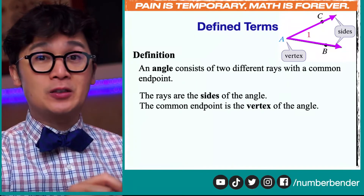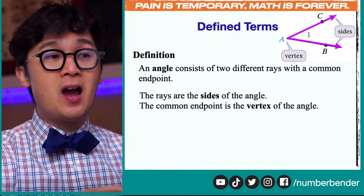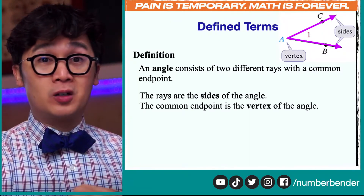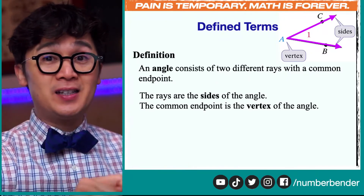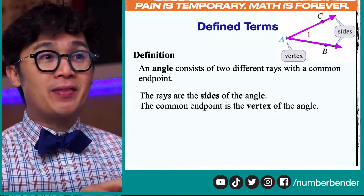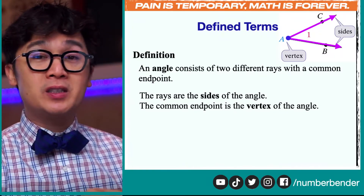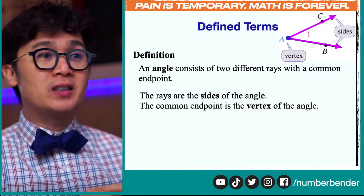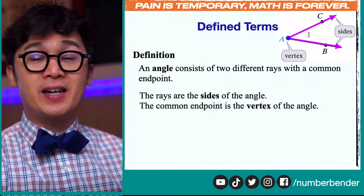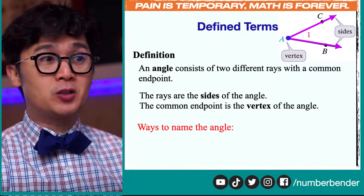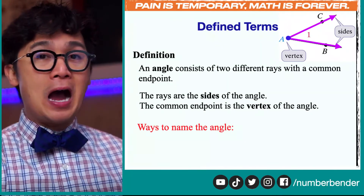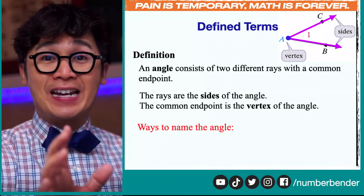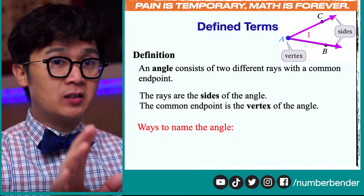So again, the two sides are the rays of our angle in this example, and the common point, which is point A, is what we call the vertex in geometry. So how do we properly name an angle?